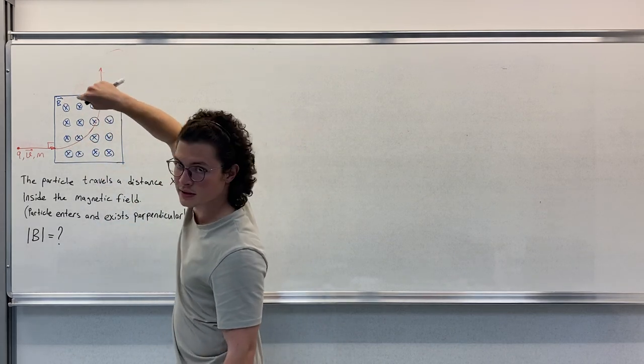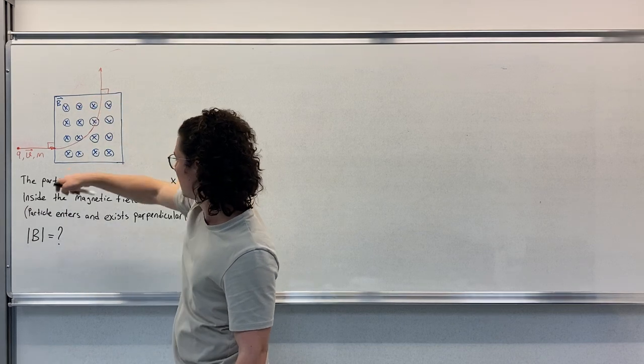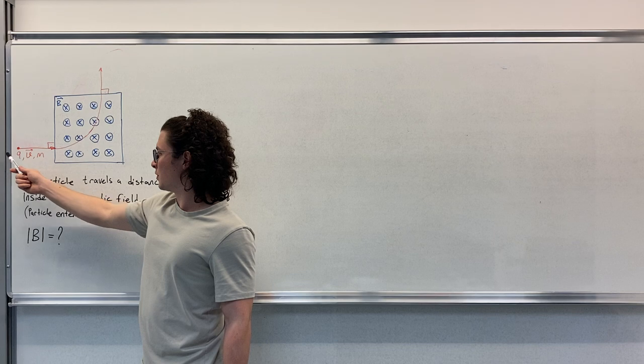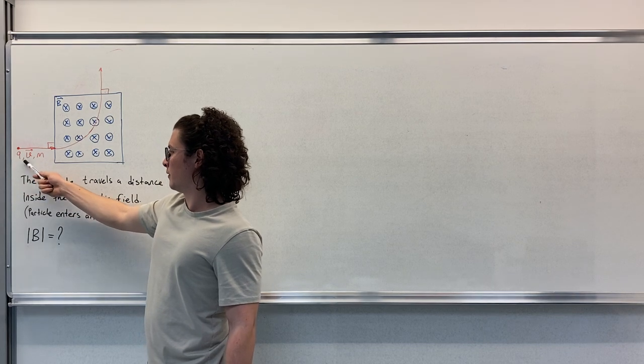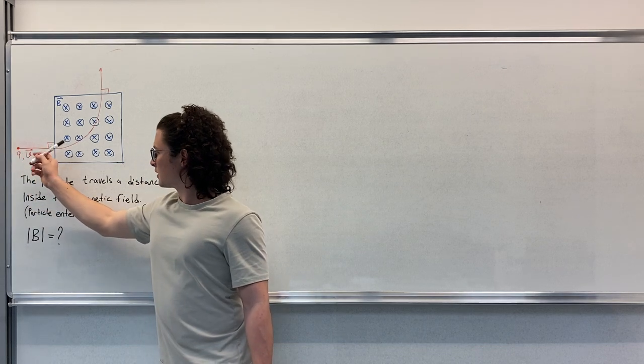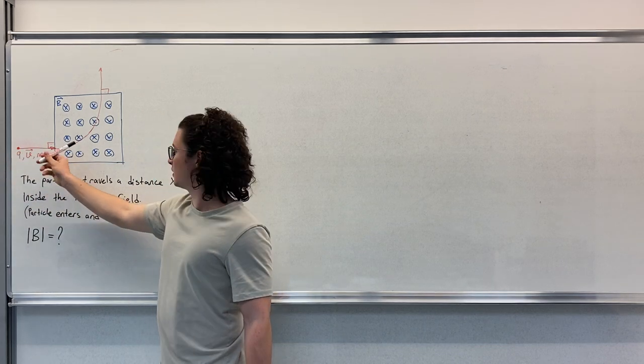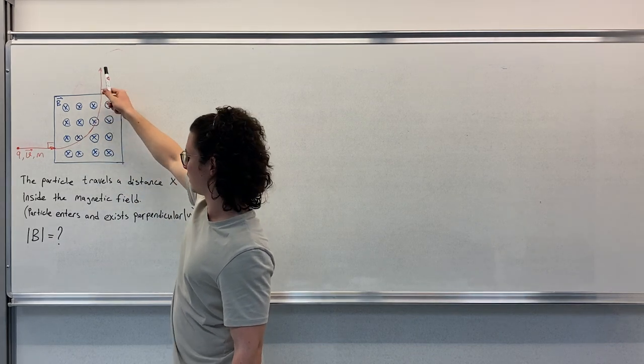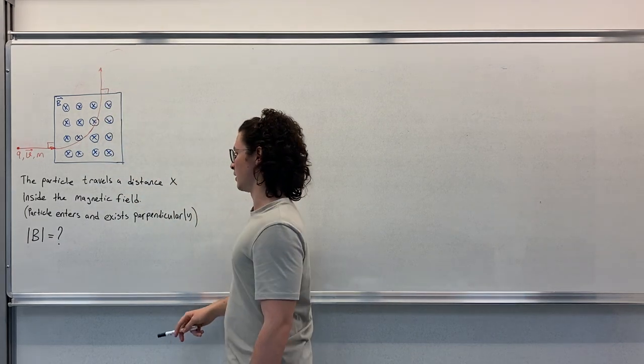The magnetic field points inverse to the screen and we have a particle here which is charge q, velocity v, and mass m. It goes straight like this, it enters perpendicularly and it goes like this, and x is perpendicularly.